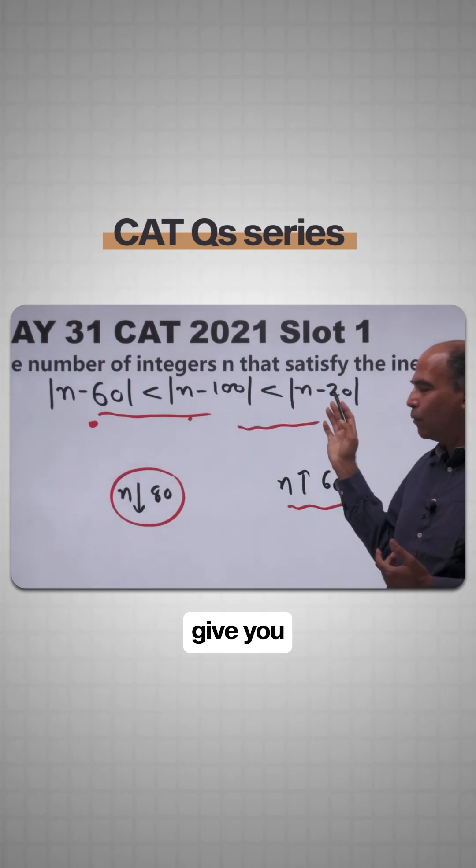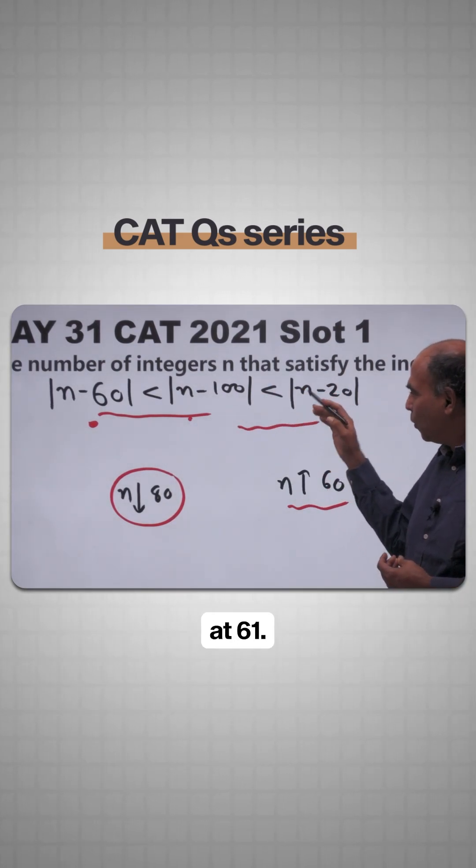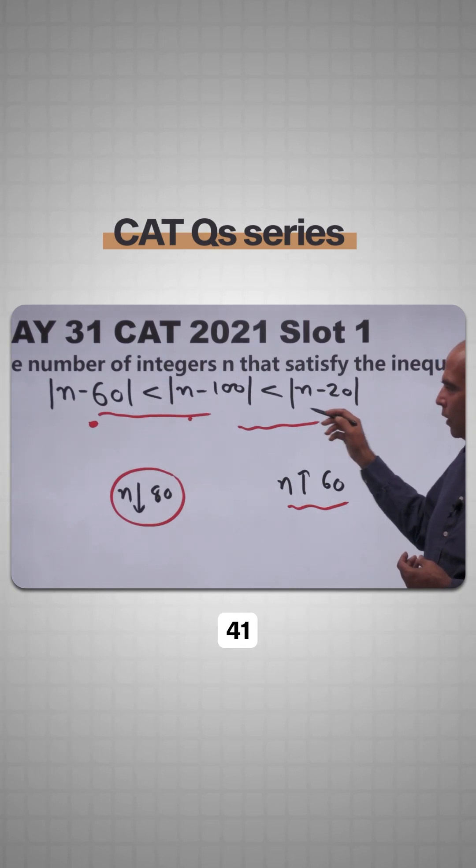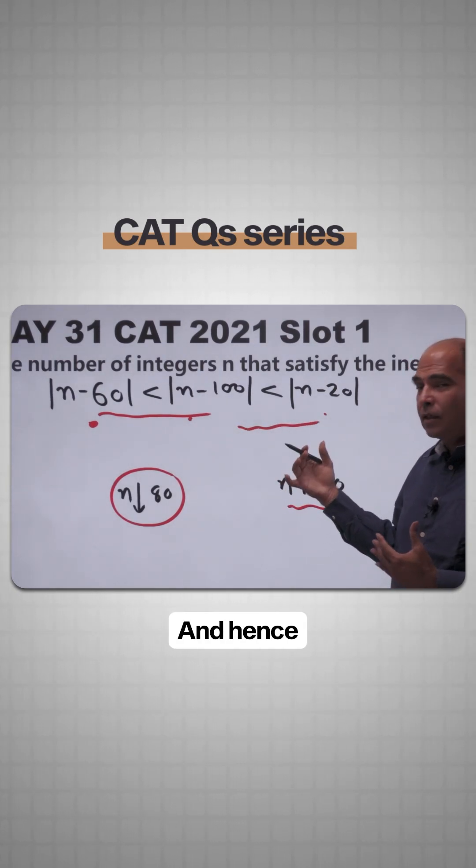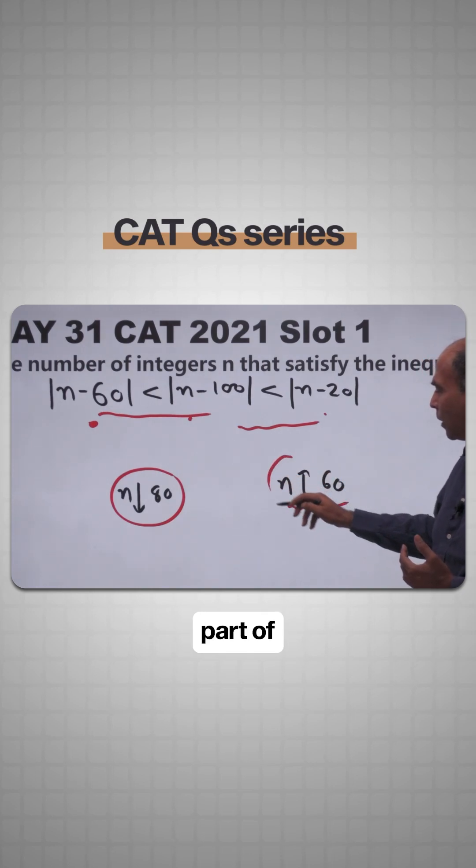At 60, you can see that both of them will give you the same value. At 61, this will be 41 and this will be 39, and so on. Hence you realize that this part of the equality is true when n is greater than 60.